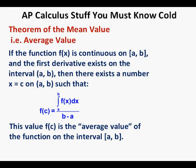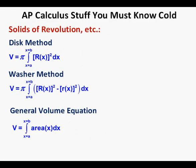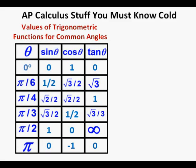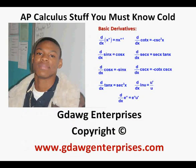Solids of revolution: Disk method — the volume equals pi times the integral from a to b of the radius squared dx. Washer method — the volume equals pi times the integral from a to b of (outer radius squared minus inner radius squared) dx. General volume equation — the volume equals the integral from a to b of the area dx. Also included is a table of values for the commonly used angles on the unit circle. This has been AP Calculus Stuff You Must Know Cold — thanks for reviewing it.